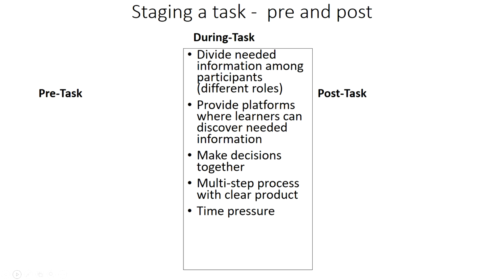For groups that are slow or fast, you can always add extra steps at the end of a task which the faster groups could get to, but if the slower groups don't reach them, that's not the end of the world. Sometimes a task will include a surprise turn of events — if learners are choosing between options A, B, and C and C is obviously the best choice, surprise them halfway through by saying C is sold out. Which of A or B is the second best? This requires them to use more language or renegotiate and re-evaluate their process.